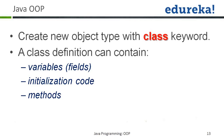A class definition can contain variables, initialization code, and methods — those are the three things a class can contain. Variables, like X, or a type variable in the Animal class. Initialization code, like writing type equals not human — that is initializing the variable. And you can also have methods within your class, which we'll discuss shortly.